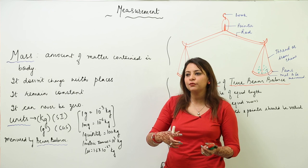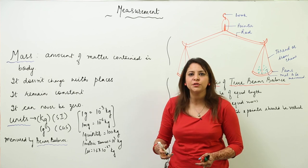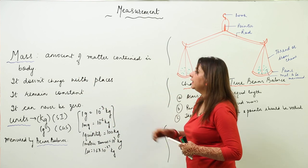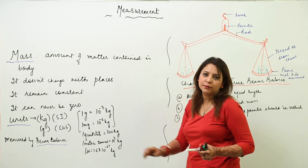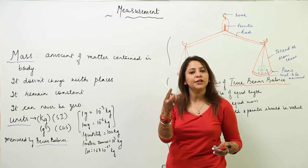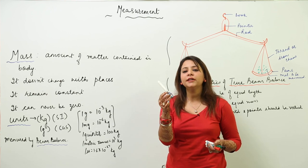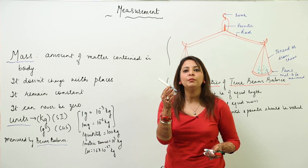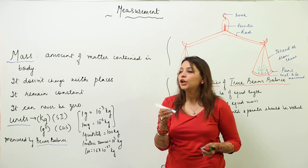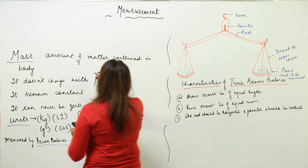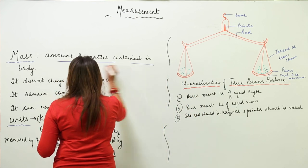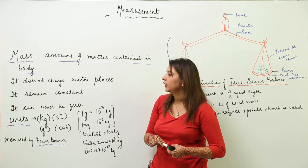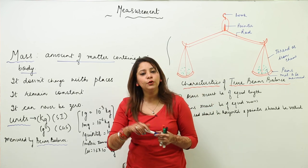First, we will start with basic physical quantities which we can actually measure. The first is mass. Mass is the amount of matter contained in a body. For example, if I talk about the mass of this marker, that means the amount of matter contained in this marker. So mass refers to the amount of matter present in a body.